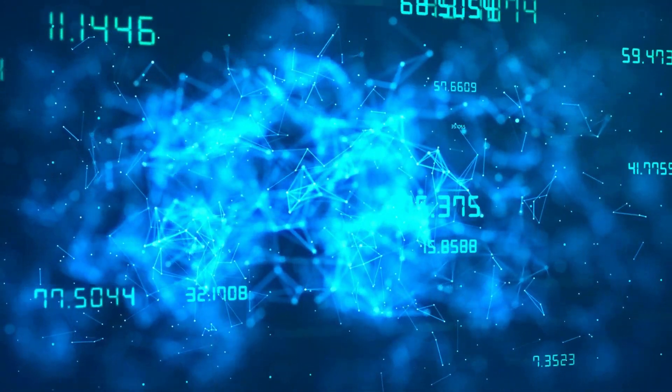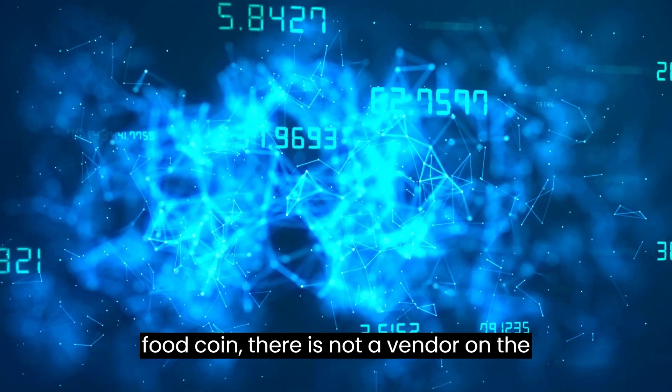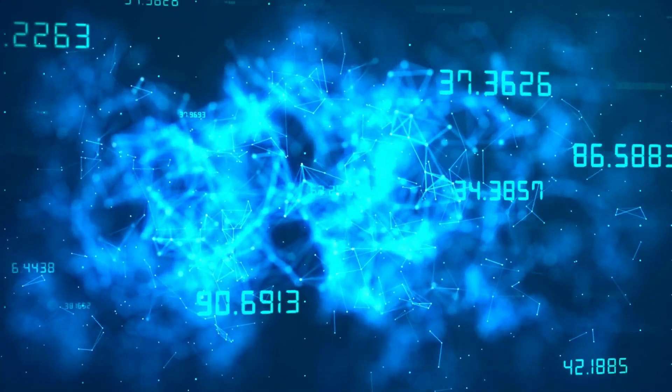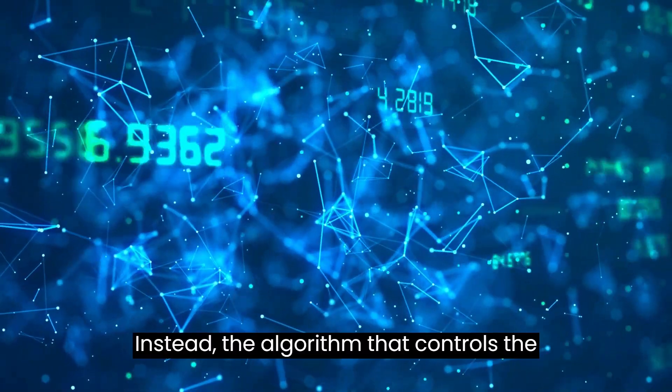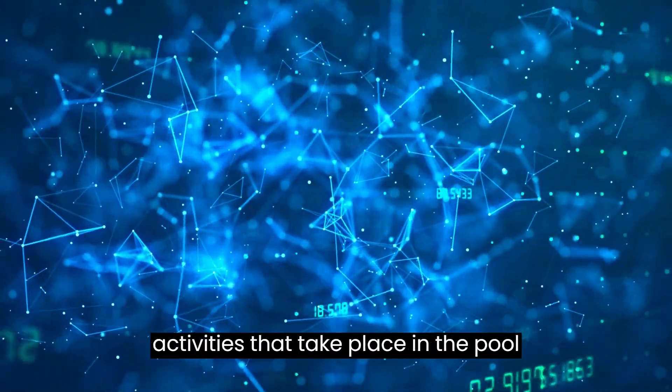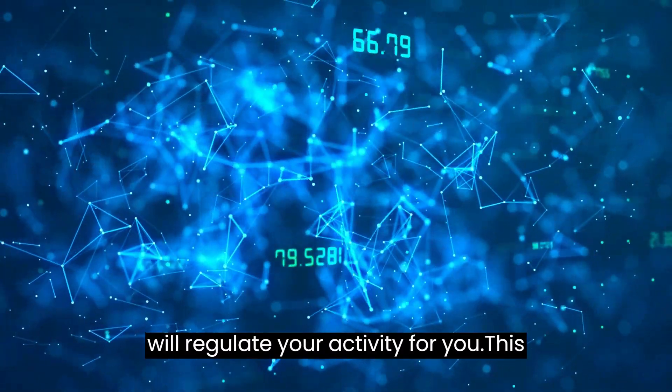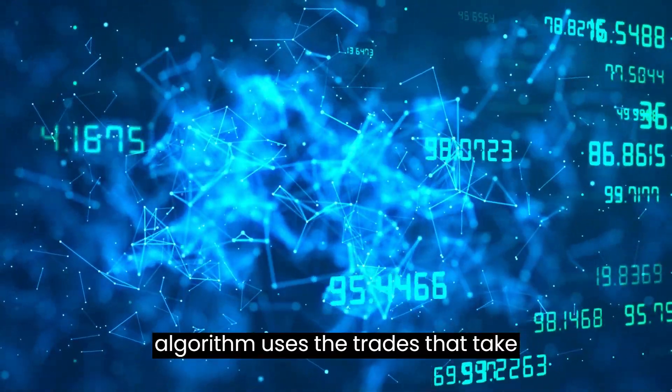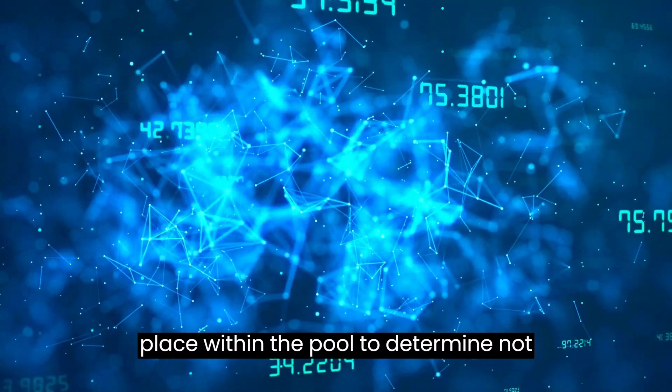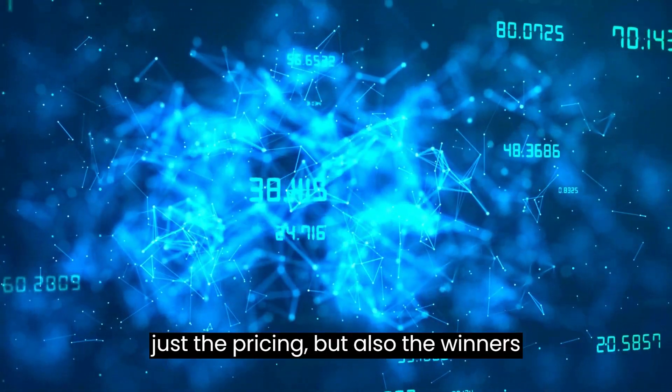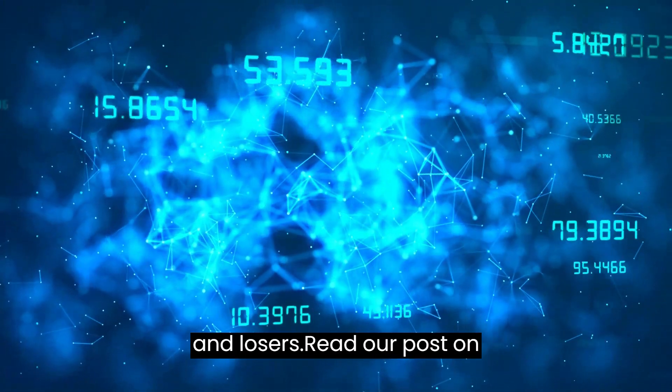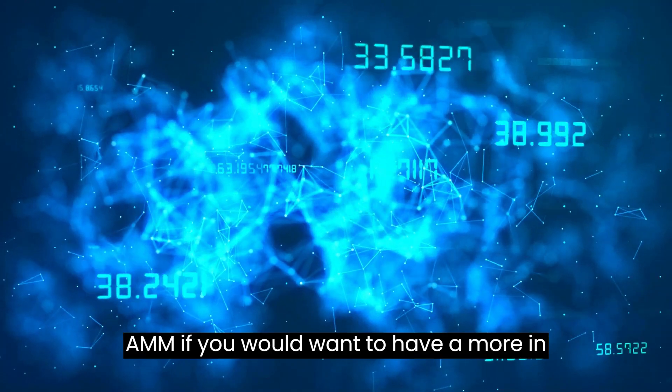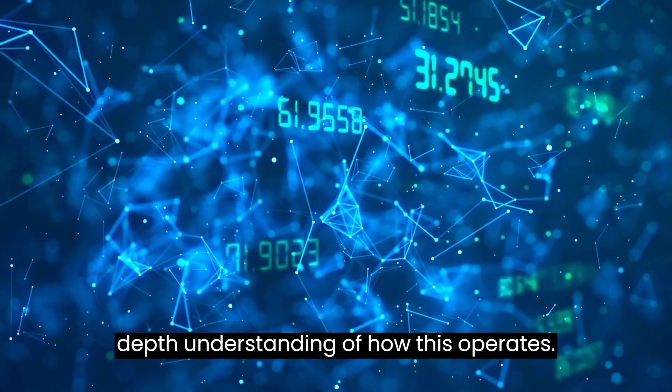On Uniswap, when you are purchasing the most recent food coin, there is not a vendor on the other side in the classic sense. Instead, the algorithm that controls the activities that regulate your activity for you. This algorithm uses the trades that take place within the pool to determine not just the pricing but also the winners and losers. Read our post on AMM if you would want to have a more in-depth understanding of how this operates.